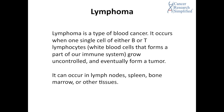Lymphoma is a type of blood cancer. It occurs when one single cell of either B or T lymphocytes, which are both white blood cells that form a part of our immune system, grow uncontrolled and eventually form a tumor. It can occur in lymph nodes, spleen, bone marrow, or other tissues.